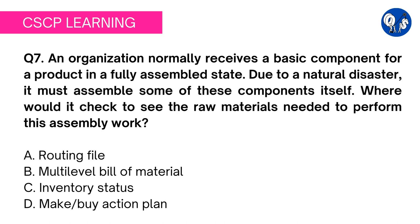Option A: routing file. A routing file consists of process scheduling, capacity scheduling, scheduled assignments of material needs, and manufacturing documents. It has nothing to do with the raw material required to build the engine of the car. Option B: multi-level bill of material.